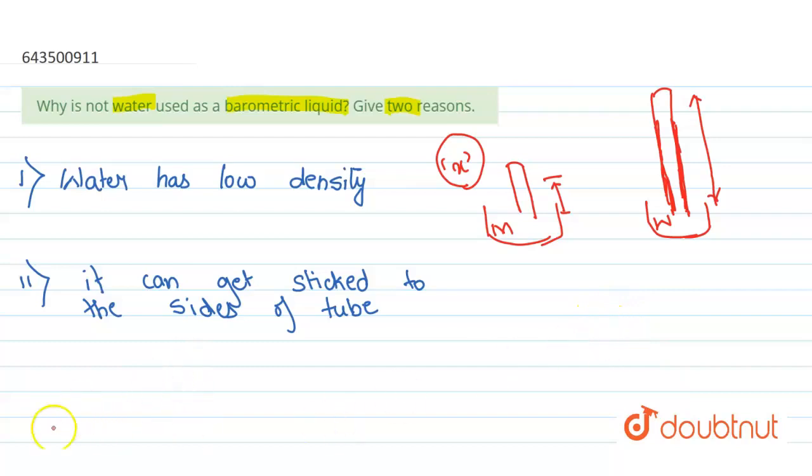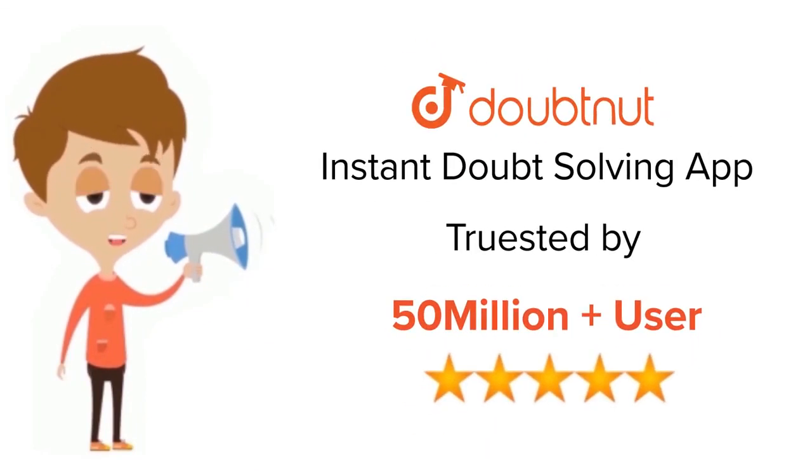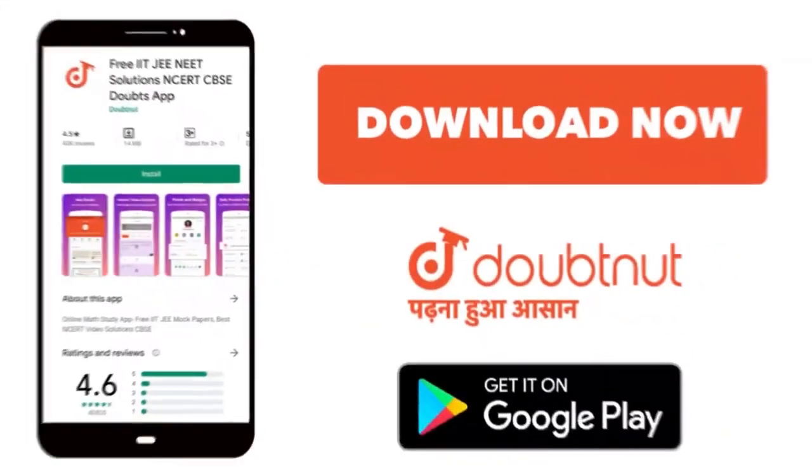So those were the two reasons why we cannot use water as a barometric liquid. I hope you understood the solution. Thank you. For class 6 to 12, IIT-JEE and NEET level, trusted by more than 5 crore students, download Doubtnet app today.